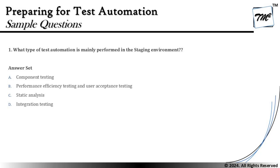So let's check this out. They are asking: what type of test automation is mainly performed in the staging environment? We have four options: A — component testing; B — performance efficiency testing and user acceptance testing; C — static analysis; and D — integration testing.